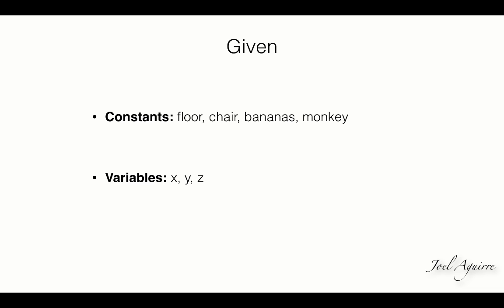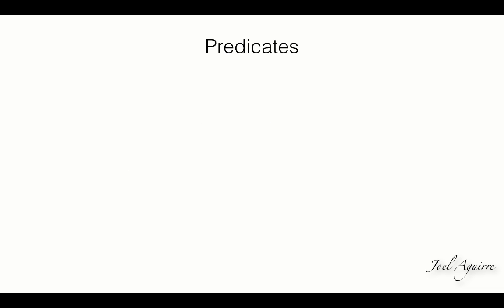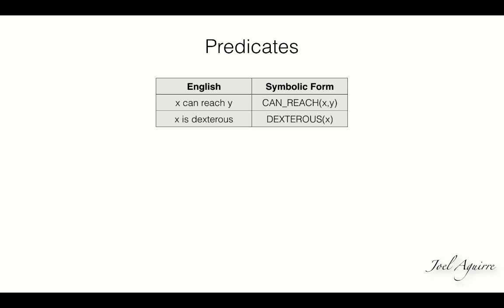Let's name our variables x, y, and z. English statements can be expressed as predicate expressions. Predicate names are written in uppercase while variables in lowercase. For example, x can reach y in FOPL symbolic form is the predicate CAN_REACH of arguments x, y. And then in the sentence, x is dexterous, the predicate DEXTEROUS is written in uppercase while variable x is in lowercase, and so on.